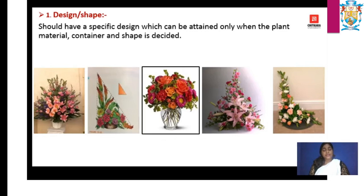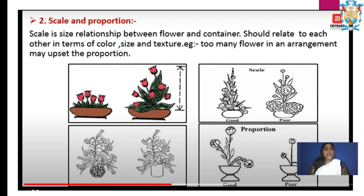When we talk about flower arrangement, we have to keep in mind the different aspects required. The first one is design and shape. After you do everything, you should know what design you are making and what shape it is. The different shapes include triangle shape, horizontal shape, fan shape, and crescent shape. Design or shape is a specific design which can be attained only when the planned material, container, and shape is decided.